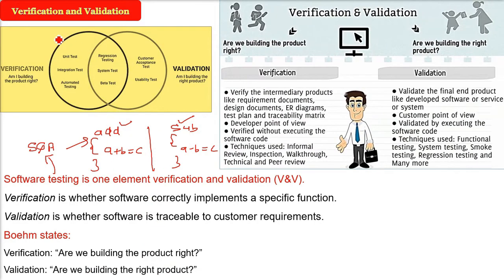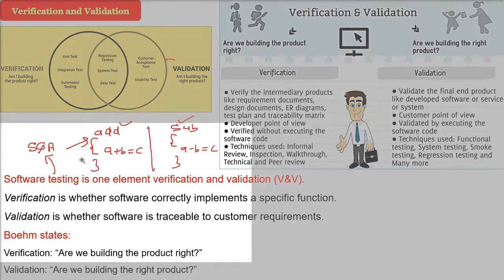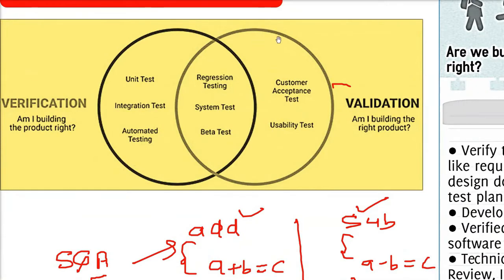So this is a kind of Venn diagram. How does verification and validation relate? As I said, they are coming under software testing, which is coming under software quality assurance. The customer acceptance test and the usability test is the requirement of the user. So am I building the right product? This comes under validation.